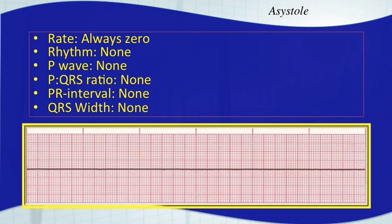The rate is going to be zero because nothing's happening. There's no rhythm, there's no P-wave, no QRS. Now there is such a thing as a ventricular asystole where your atria is still firing but your ventricles aren't doing anything. That would just show up as P-waves — sometimes it's called ventricular standstill. But your typical asystole is going to have no electrical activity whatsoever.